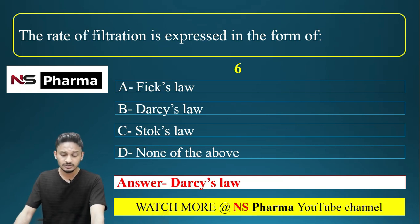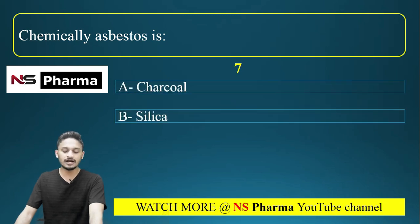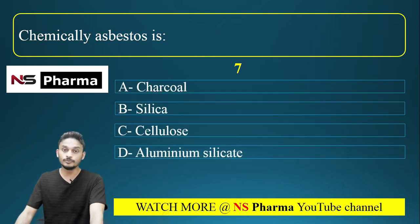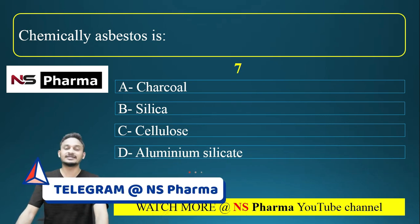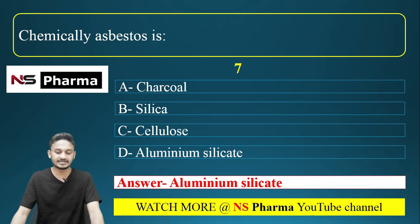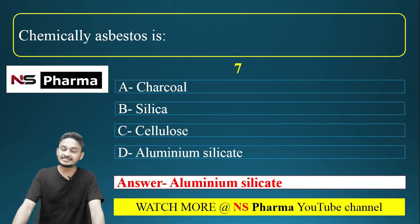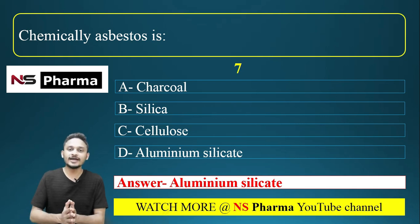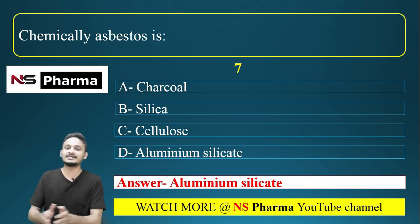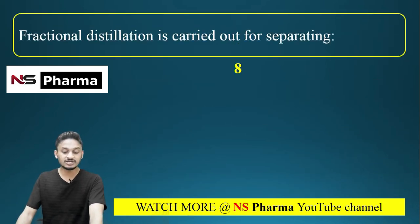Question 7: Chemically, asbestos is — options: (a) charcoal, (b) silica, (c) cellulose, (d) aluminum silicate. The correct answer is option D: aluminum silicate. A memory tip: the first two letters of 'asbestos' are 'as', which can represent aluminum silicate.